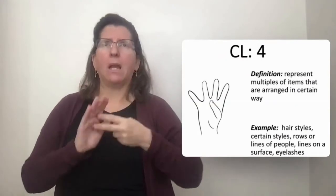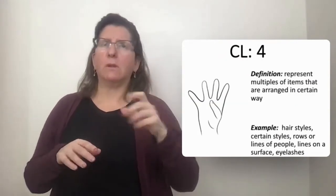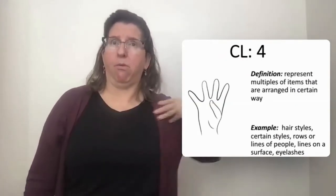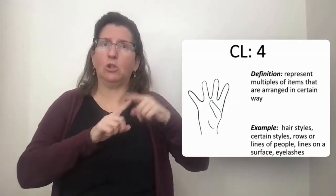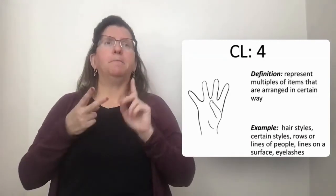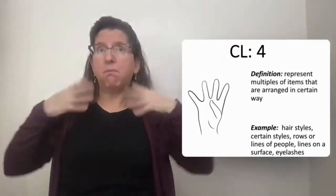Classifier 4 represents rows, so you have stripes on your top, horizontal stripes on your t-shirt, or it could be used to describe your hair.